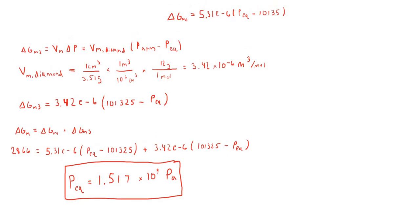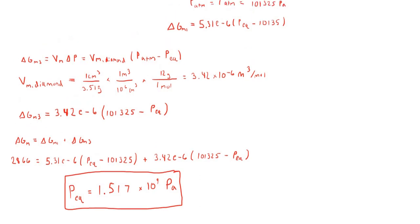So at a typical room temperature, you would have to increase the pressure of graphite to 1.517 times 10 to the ninth pascals in order to change graphite to diamond.